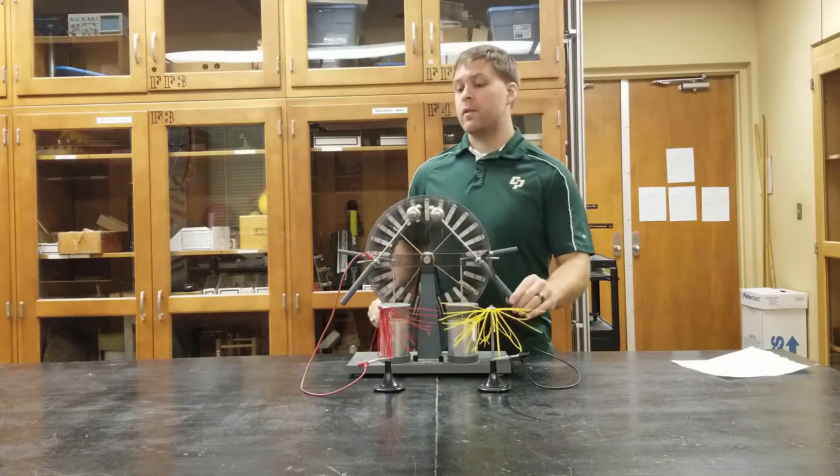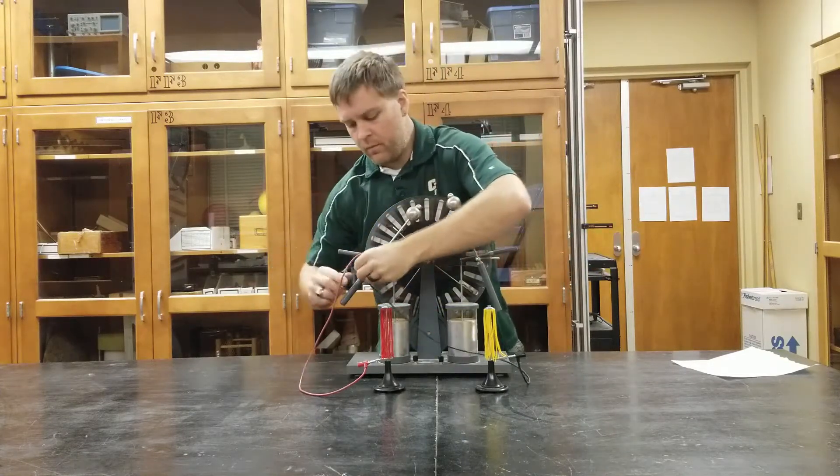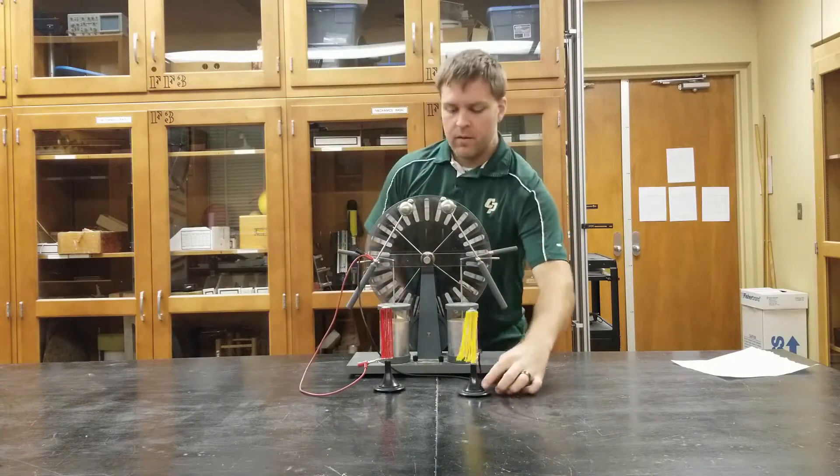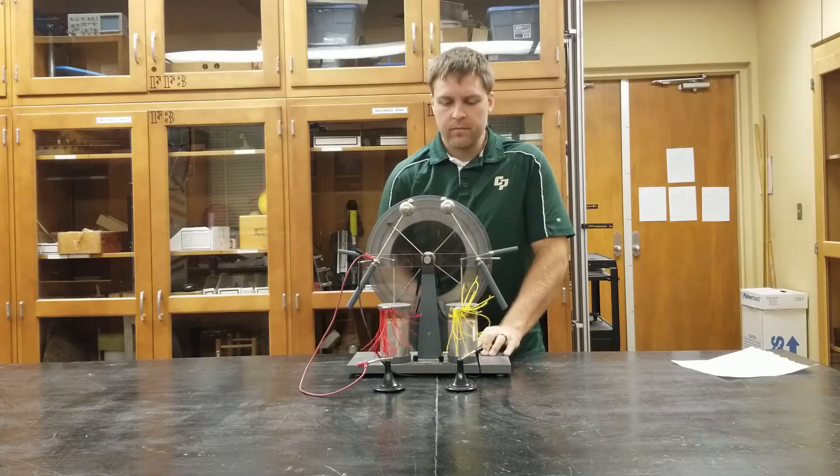And then after discharging the charged rods one last time, you can swap the leads so that both come out of the same output to show the electric field lines of two similarly charged objects like this.